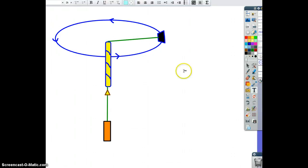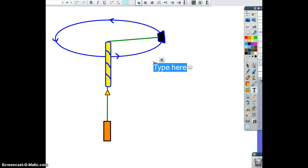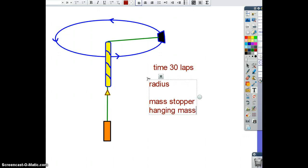Things you're going to record. You need to record, make sure you're recording the time of 30 laps. You need radius. You need the mass of the stopper, you need the hanging mass, which of course, you will vary.